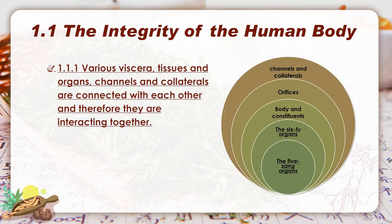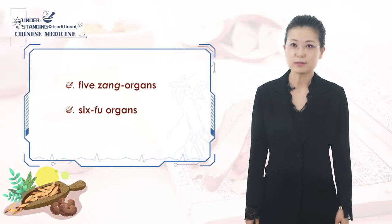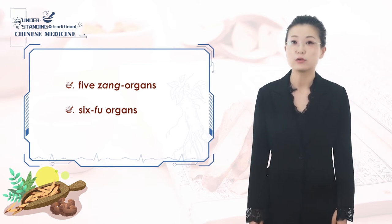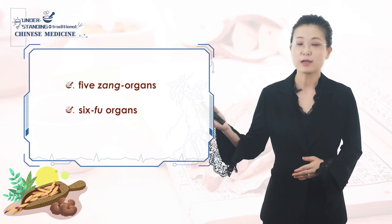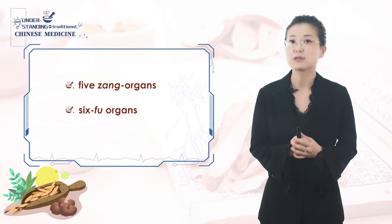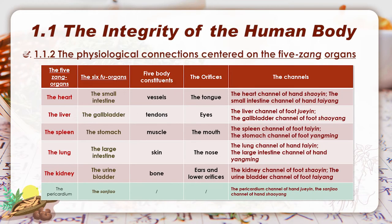This kind of connection or network-like system takes the five zhang organs as the center. Different from Western medicine, TCM divides internal organs into two groups, known as five zhang organs and six fu organs. For specific contents about zhang and fu, we will learn later. The general connection is demonstrated in the form. Let us take the heart as an example: the heart and small intestine build up an interior-exterior relationship. The heart governs the vessels of the whole body and opens into the tongue, and there are two main channels — the heart channel of hand shaoyin and the small intestine channel of hand taiyang — that serve as the contact system.